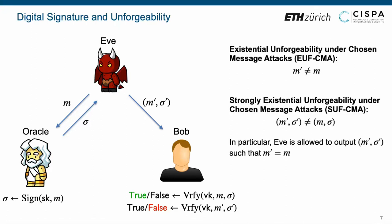The strong unforgeability requires Bob to reject any forged message signature pair, which is unequal to any pair derived from the interaction between Eve and the signing oracle. In particular, Eve can win the strong unforgeability experiment by forging a new signature sigma prime for a message M' equals M that has already been queried.